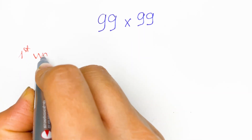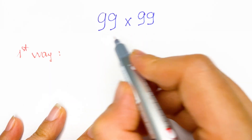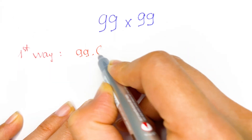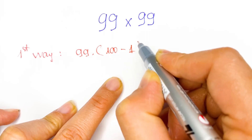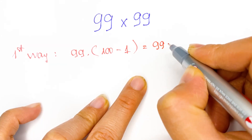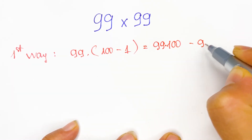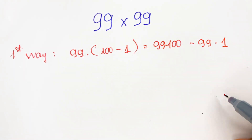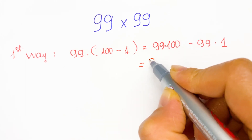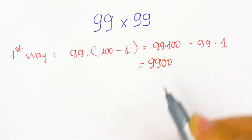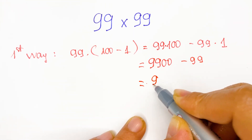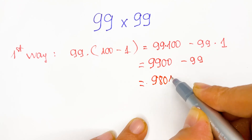The first way. You can rewrite 99 as equal to 100 minus 1. So therefore, we have 99 times 100 minus 1, which is equal to 99 times 100 minus 99 times 1. You can see 99 times 100 is equal to 9,900, and then minus 99. So therefore, we have the answer: 9,801.